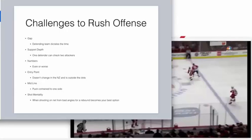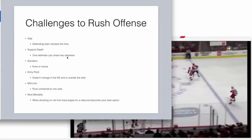Let's talk about rush offense and why rush offense has problems. One of the problems starts with the gap — the defending team is dictating the time, and we want to flip that so the offensive team is dictating the time. We also need good support depth: one defender can check two attackers, so if you cross the blue line with all three forwards in a straight line, that's poor support depth. You want people in layers.